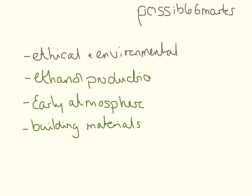There are quite a few possibilities for the six-mark question in C1. They really like to ask you ethical questions, environmental questions — they really like for you to have an opinion. Go and check out my video on how to answer the six-mark questions. A couple of topics that I think might come up are ethanol production and different methods for that, the early atmosphere, the theories about how life got started, what happened with the gases in the early atmosphere, and possibly building materials — so that could cover limestone or metals.